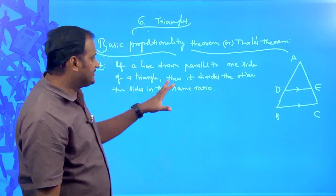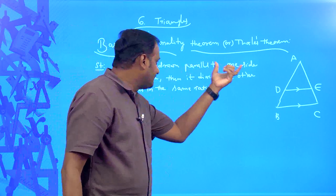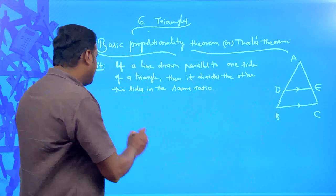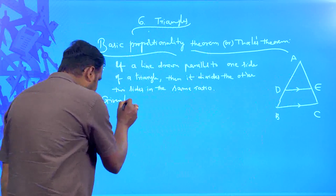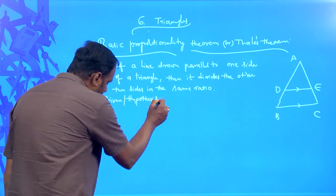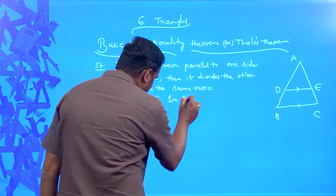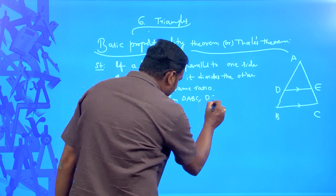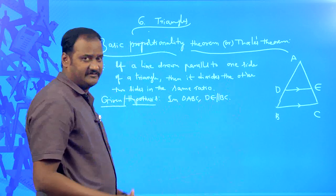So, what is the information given in the statement? In triangle ABC, you are drawing a line parallel to one side. That is the hypothesis or given. So, what is the given: in triangle ABC, DE is a line drawn parallel to BC — that is the information given.